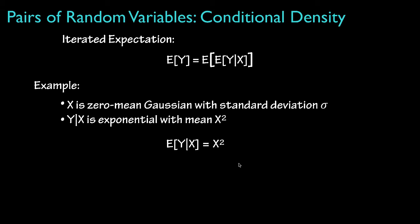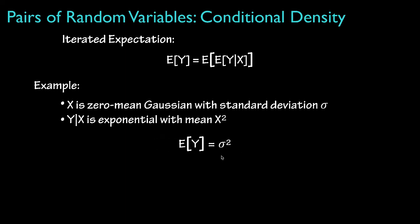Now let's approach this in a different way using iterated expectations. Using iterated expectations, we can see that when we condition on x, the expected value for y is by definition x squared. Then we take the expected value of this random function of x, which results in the expected value of x squared. Since x is a zero-mean Gaussian random variable with standard deviation sigma, the expected value of x squared by definition is sigma squared. By iterated expectations, this is the expected value for y. This approach works for finding the second moment for y or any other function of y, and it's a valuable and powerful method for finding expected values in models that involve more than one random variable.